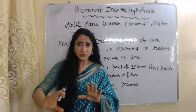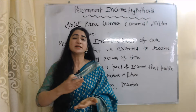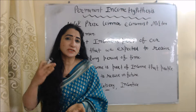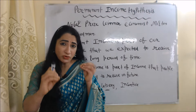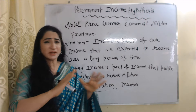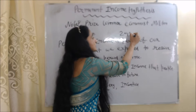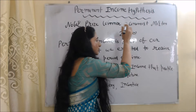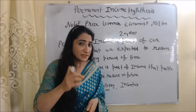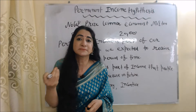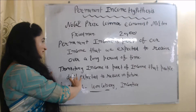For example, you have experience of many years and a particular skill. Based on this, you are sure that wherever you work, you can earn at least 20,000 per month. This 20,000 per month is your long-run expected income — your permanent income.